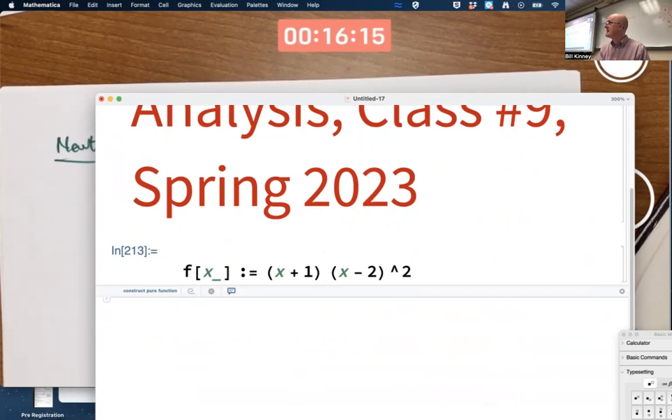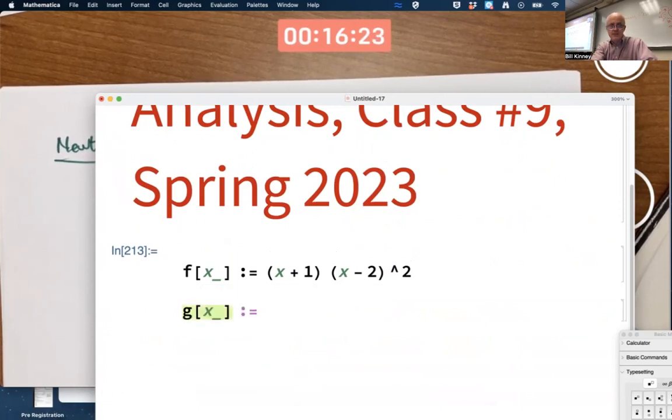But the one at two is a double root. Newton's method is going to converge very slowly to the double root. Let's go ahead and define our g(x) function: x minus f(x) divided by f prime of x.